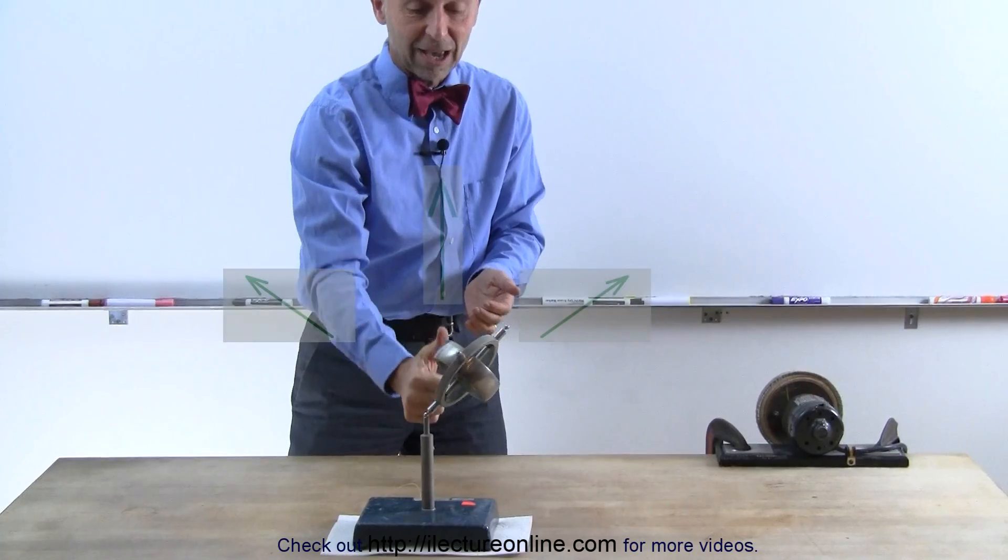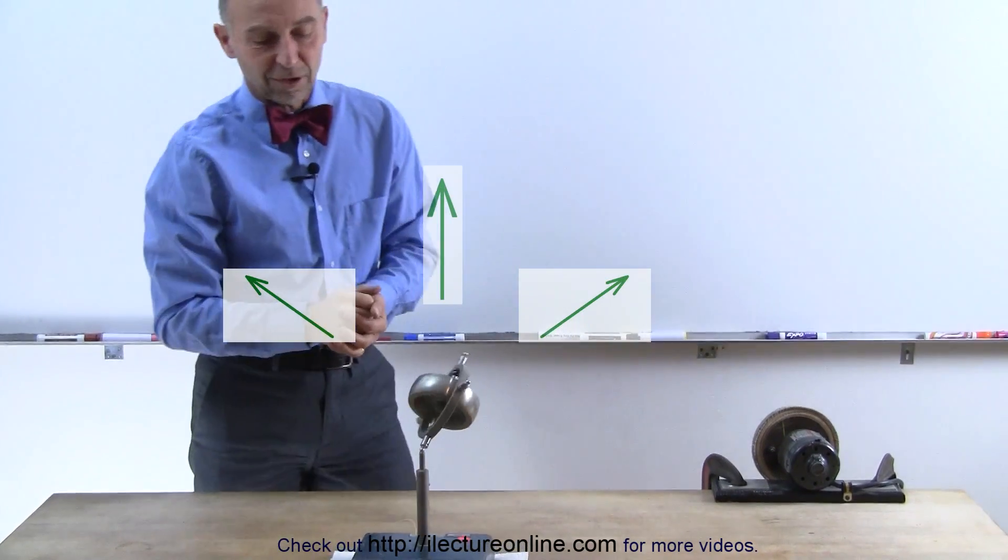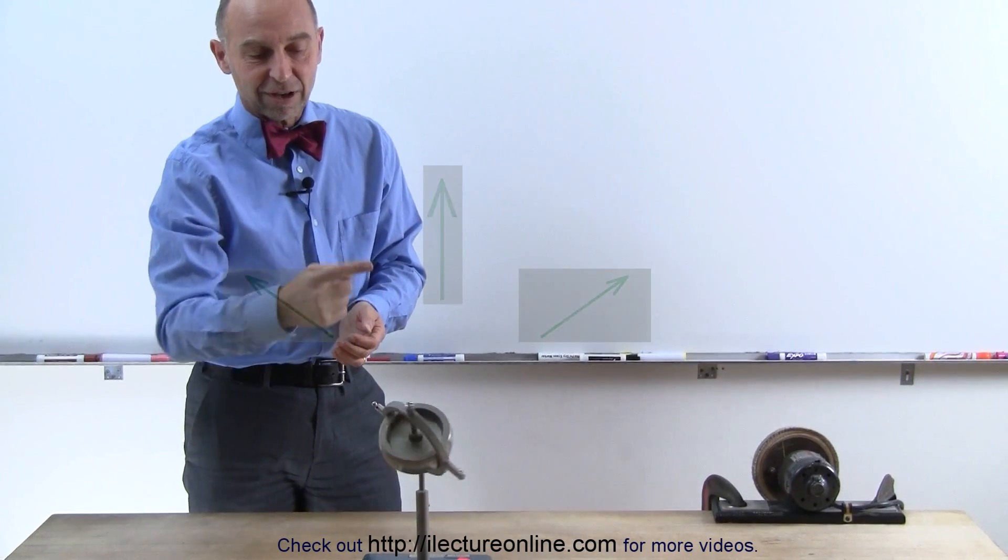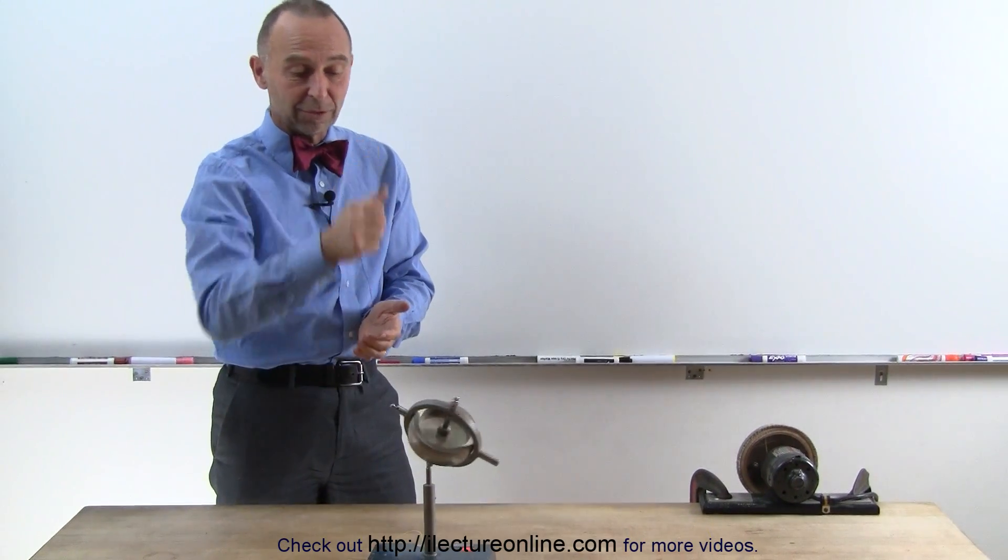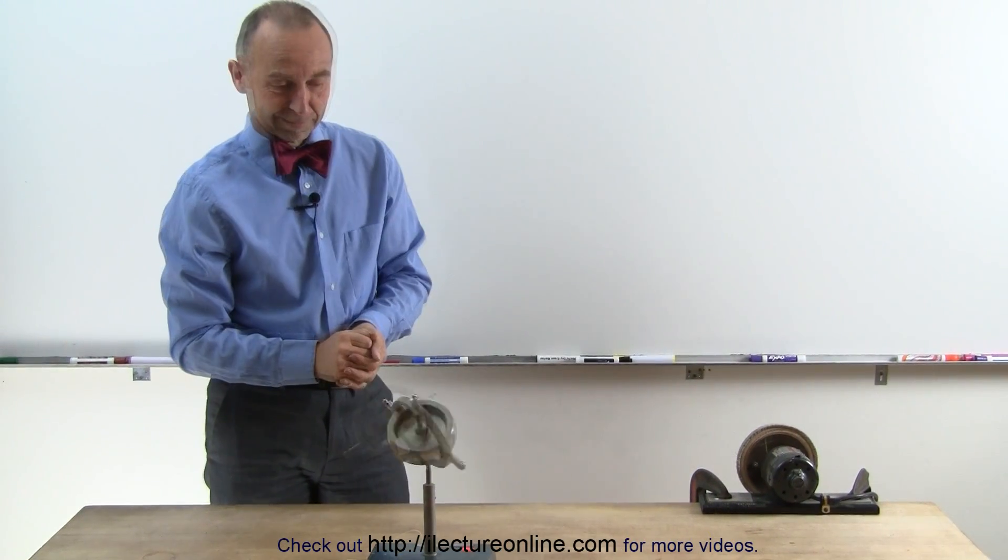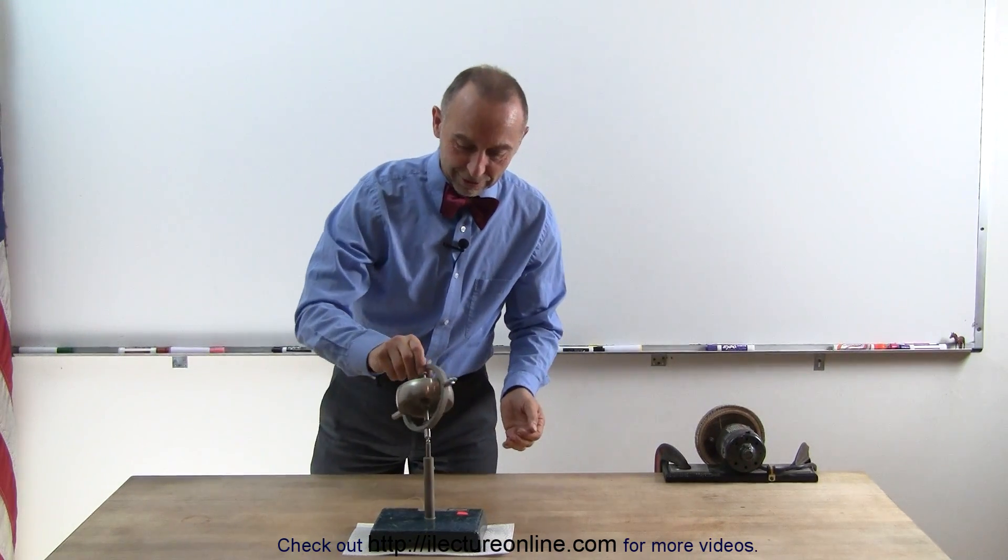So there's actually two types of angular momentum going on right here. One for the spinning disc, and one for the whole gyroscope rotating around. So you can see that it just keeps on going faster and faster and faster, and the radius arm has to change to compensate for the increase in angular momentum in the vertical direction. And let me grab that off there.